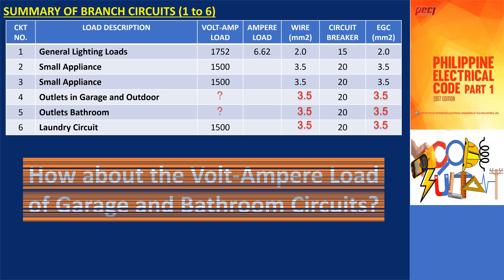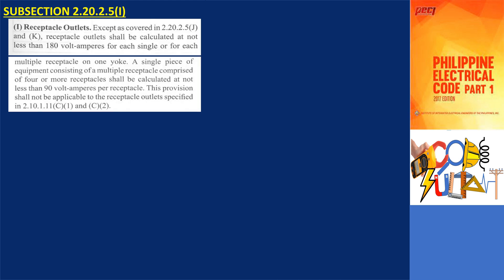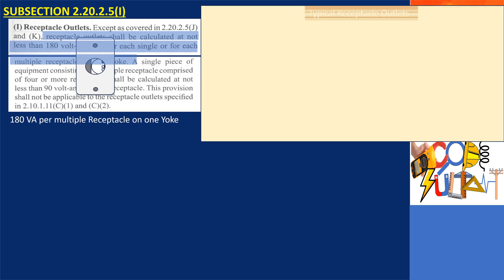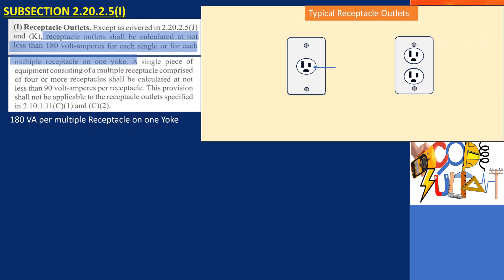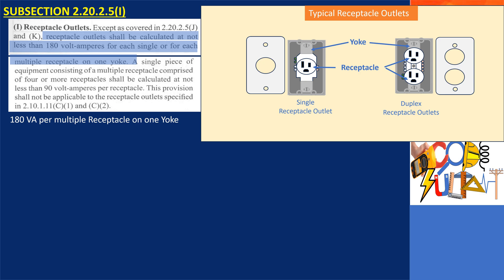How about the volt ampere load of garage and bathroom circuits? Receptacle outlets shall be calculated at least 180 VA per multiple receptacles on one yoke, as specified in subsection 2.20.2.5i. The yoke of a receptacle is the frame — the metal portion of the receptacle used to mount a device to the outlet box. Therefore, both single and duplex receptacle outlets have one yoke, and these shall be calculated at least 180 volt amperes.